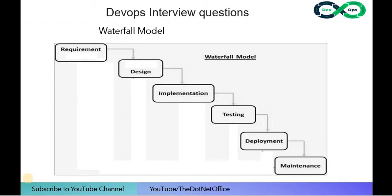Let's understand the waterfall model. This was the first model used in organizations to create software — it is a methodology and process used to create a product. As the word 'waterfall' suggests, it is a linear model, just like water falling down a cliff doesn't go back. Once the requirement is clear, the process moves through: requirement, design, implementation, testing, deployment, and maintenance.